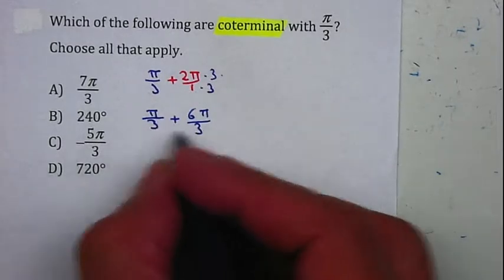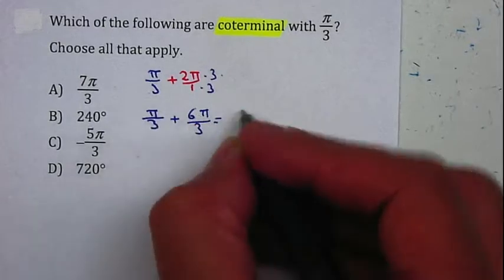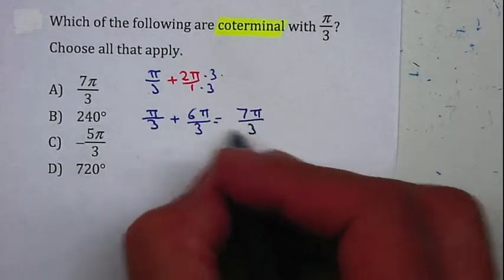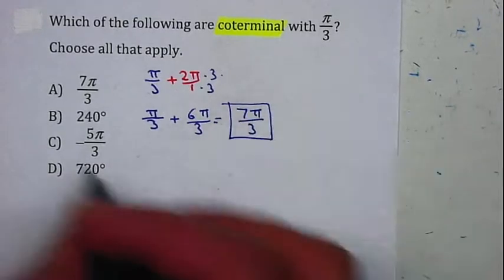And now I can go ahead and add them since I have the same denominator. 1π plus 6π will give me 7π. That denominator stays the same. So 7π over 3 is a coterminal angle to π over 3. So your answer is A.